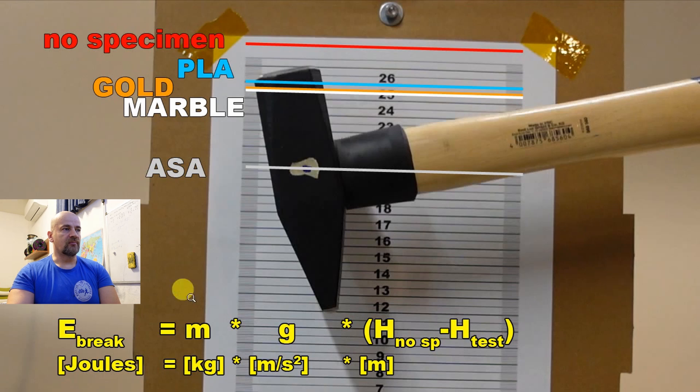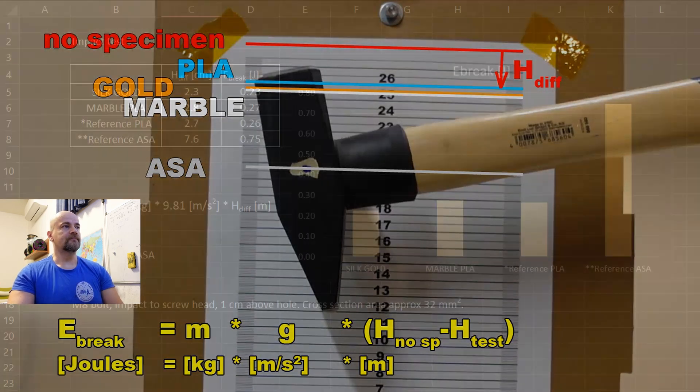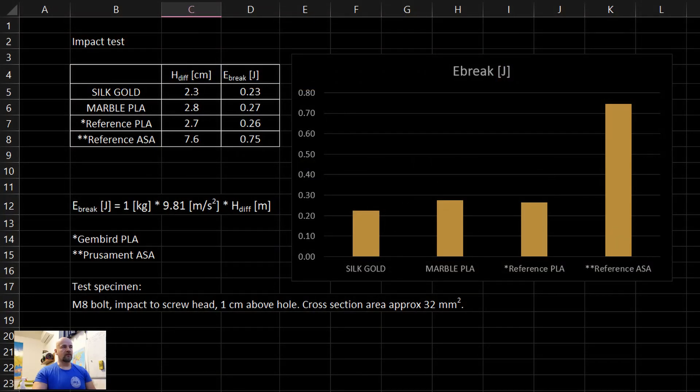So calculation of the breaking energy is the mass, which is one kilogram - the weight of the hammer - g is 9.81 meter per square second, and the difference. Everything is measured from this red line. For example, here you can see the difference, the height difference, but of course it has to be in meters to calculate to get the breaking energy in joules. And here you can see all results.